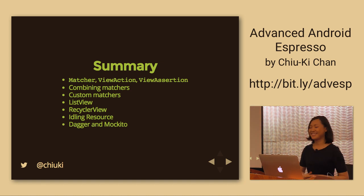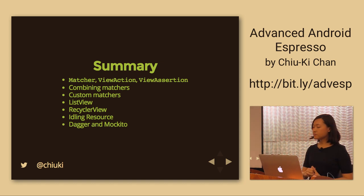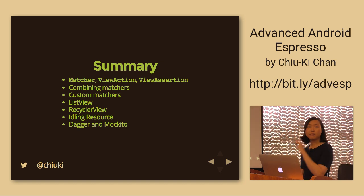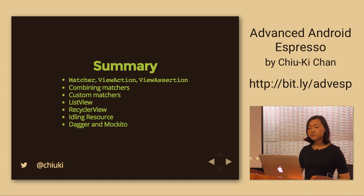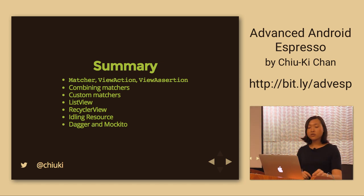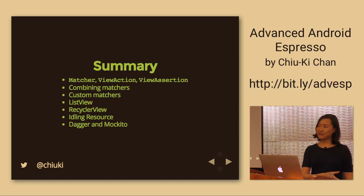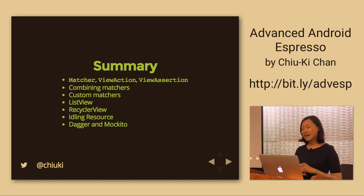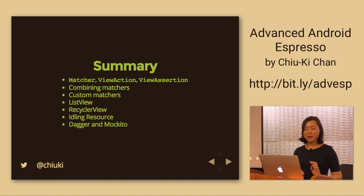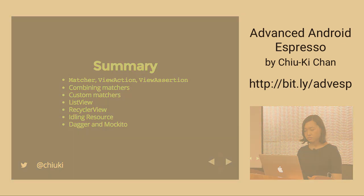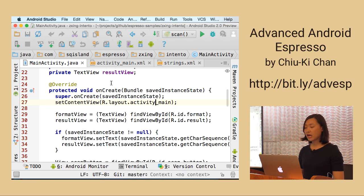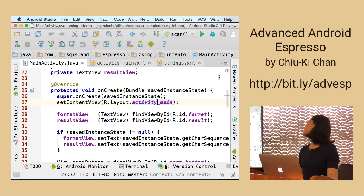In summary, we've covered view matchers, view actions, and view assertions — the basic Espresso formula — combining different matchers like the toolbar child-parent example, writing custom matchers, RecyclerView and ListView, IdlingResource, and Dagger with Mockito. That was the end of my previous 40-minute version. Since we have extended time, I'm going to show something cool — but it involves a live demo, so bear with me. Switching to Android Studio now.